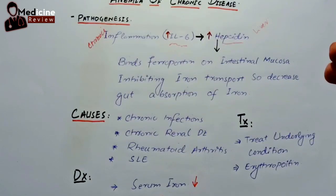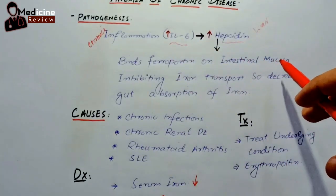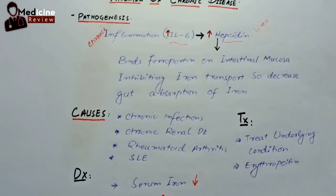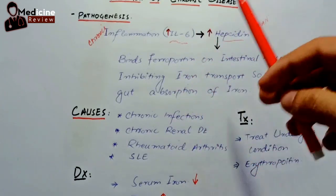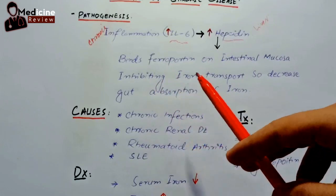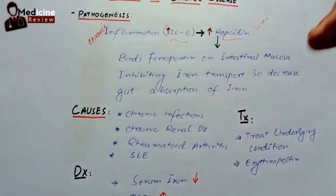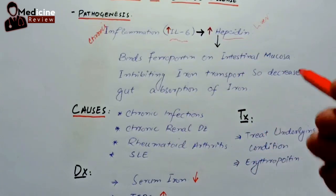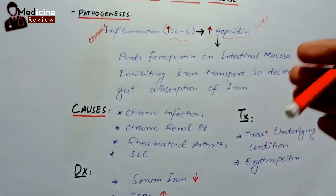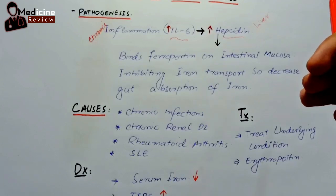Hepcidin is a strong regulator of iron absorption from the gut. Whenever hepcidin is released from the liver, it binds ferroportin on the intestinal mucosal cells or macrophages, thus inhibiting iron transport. This leads to decreased gut absorption of iron.